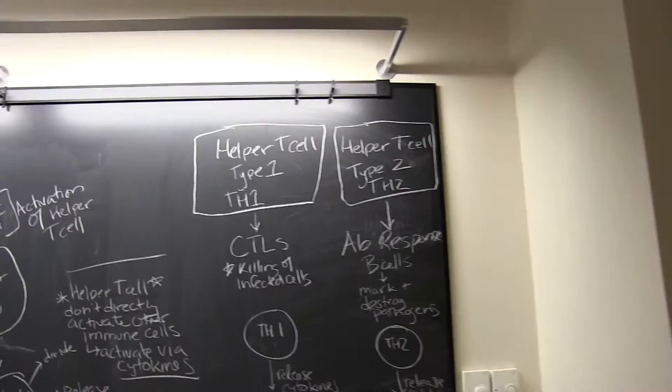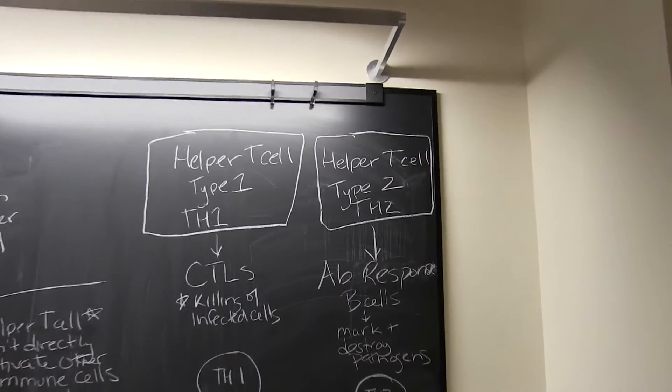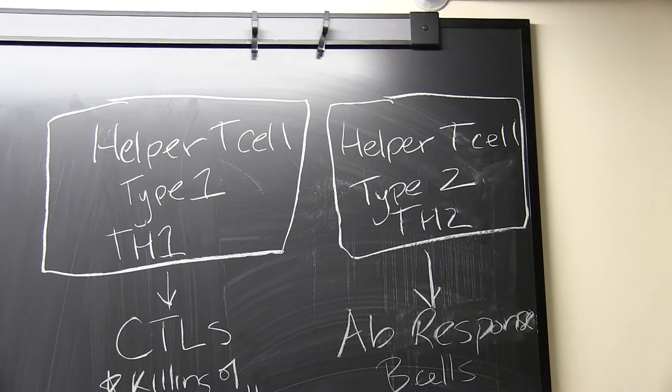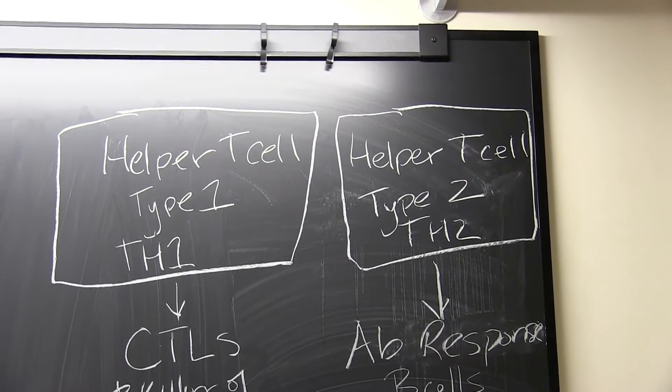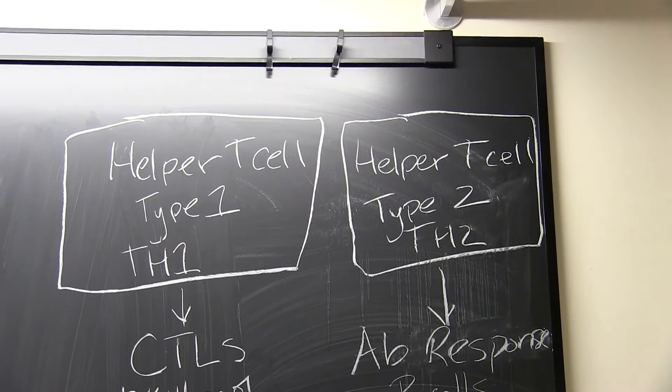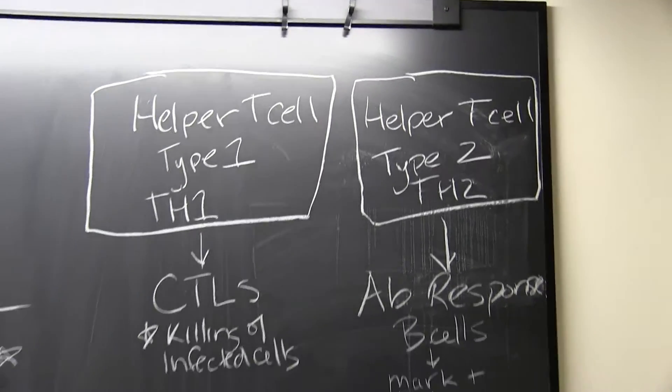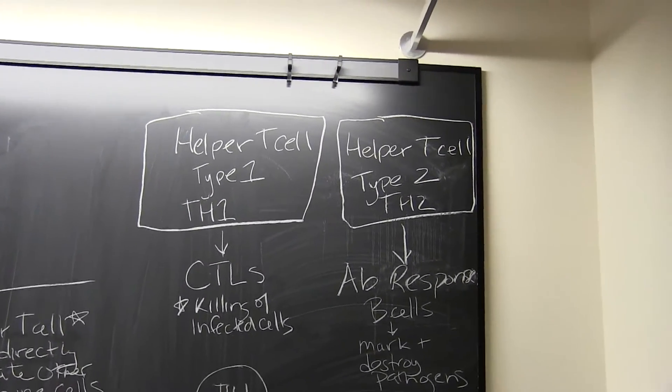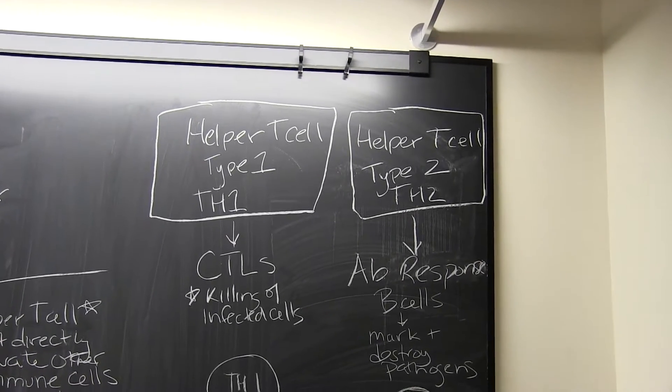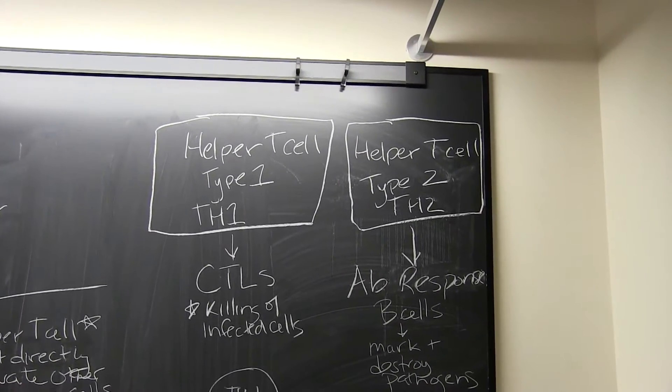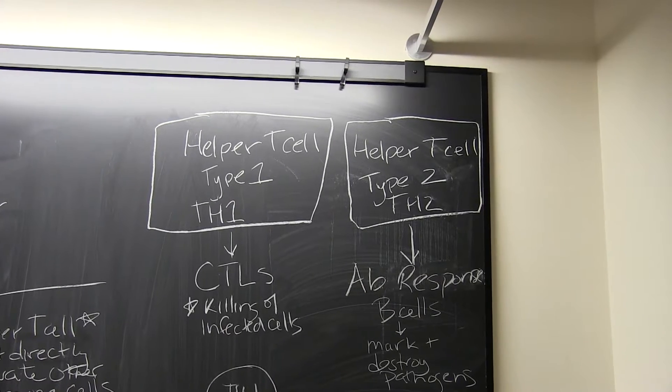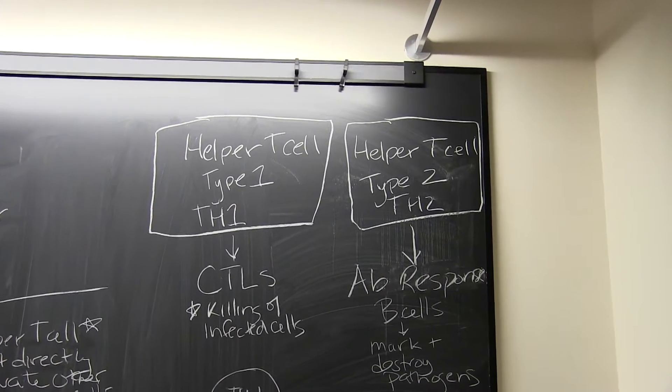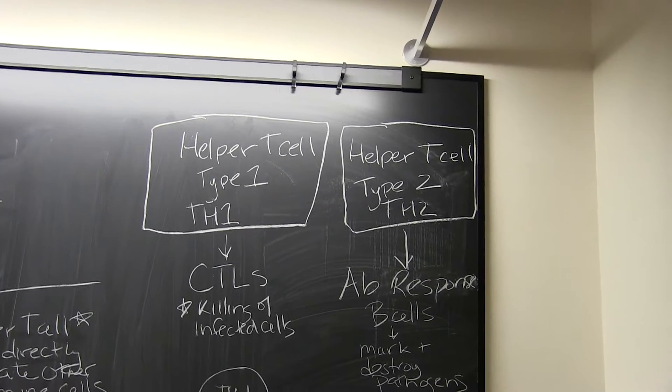We're going to focus on helper T-cell type 1 and helper T-cell type 2, which we label as TH1 and TH2. The bigger picture is to remember that helper T-cells type 1, or TH1, leads to the activation of our killer T-cells or cytotoxic lymphocytes, CTLs, and CTLs are there to kill infected cells.